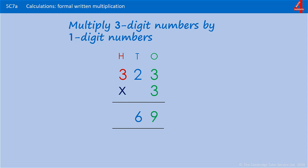The same when we multiply that 3 by the 300 — we just say 3 times 3, and that's 9, and as long as that 9 is in the hundreds column, it represents 900. Our answer is 969.